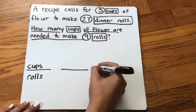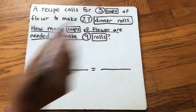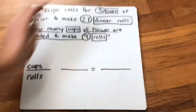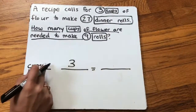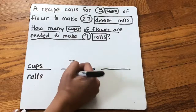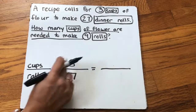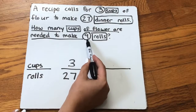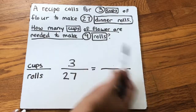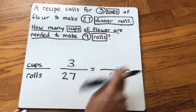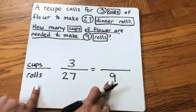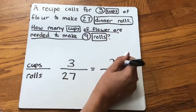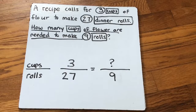Now I'm going to set up my skeleton and fill in the numbers. Three cups of flour makes 27 rolls, so three and 27 go together. The other number they give me is nine, and it's nine rolls, so I put my nine making sure it matches up with rolls. The question is asking how many cups of flour — so that's what we don't know. That's why that one's blank.